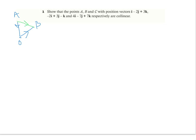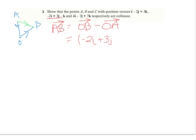I'm going to write vector AB as OB minus OA. My vector OB is going to equal negative 2I plus 3J minus K, given by the second piece. And then I want to subtract OA.